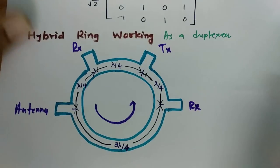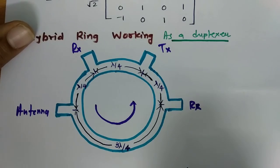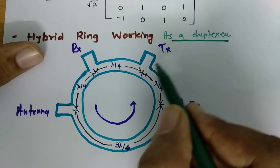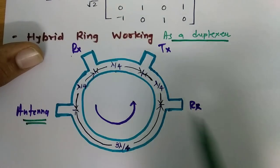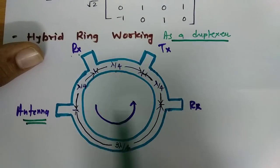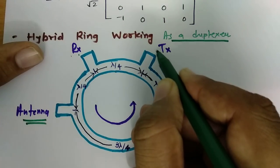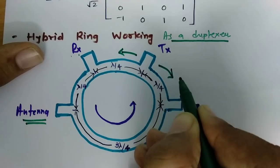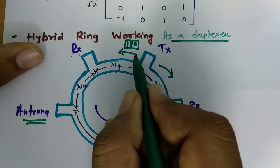Now let us see the working of the hybrid ring as a duplexer. If I give input from the transmitter circuit, this input will go to the antenna, and the signal at RX — these two are receivers — will be zero, because the signals will be out of phase and will cancel each other. Let us understand how this happens: the signal given at the input is bisected into two ways. If this is 180 degrees phase and this is zero degrees phase,